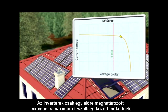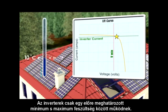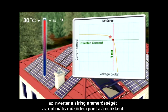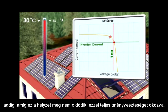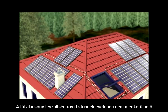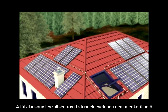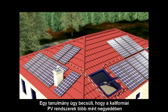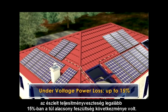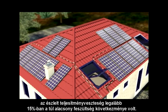Inverters will only function between a predefined minimum and maximum voltage. If the solar array produces too little voltage — for example due to high temperatures and short strings — the inverter will reduce the string current below the optimal operating point until this situation is resolved, resulting in power loss. Under-voltage is unavoidable in many cases where short strings are required. A survey estimated that over a quarter of PV installations in California experienced power losses of at least 15% due to under-voltage.